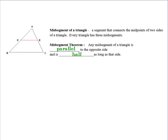A mid-segment of a triangle is whenever you connect the midpoints of two sides. Every single triangle has three mid-segments, because every side has a midpoint, and if you connect all those midpoints together, you get three of them. So if D is a midpoint of AB and E is a midpoint of AC, then AE is congruent to EC and AD is congruent to DB, because a midpoint cuts a line in half. The line DE connecting those two midpoints is a mid-segment.